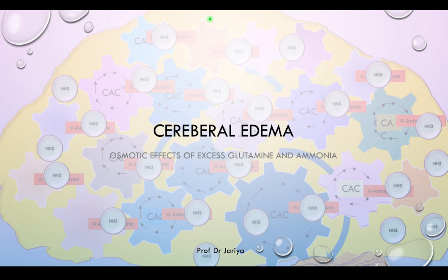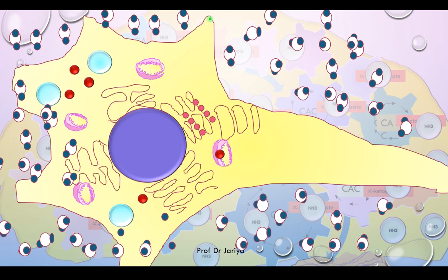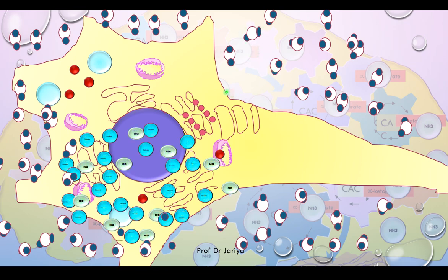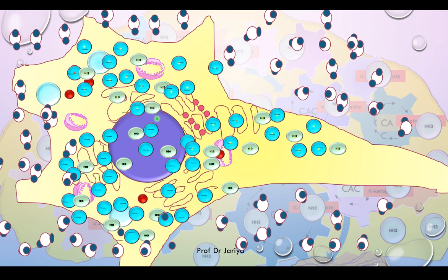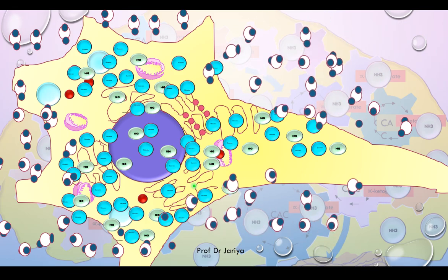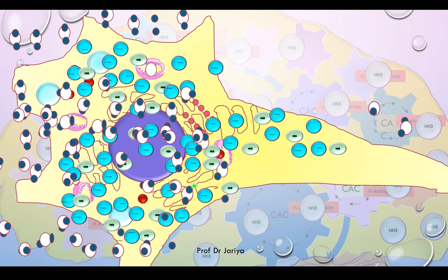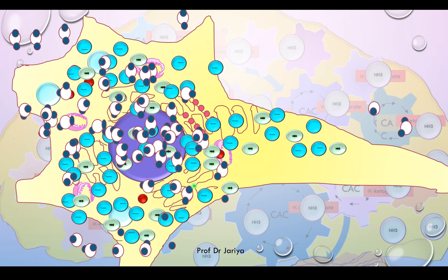There is also the development of cerebral edema, caused due to the accumulation of glutamine and ammonia. Here is the representation of an astrocyte with water molecules. When excess glutamine and ammonia accumulate — shown by the turquoise and blue colored balls — this causes osmotic effects and water is pulled into the astrocytes, leading to swelling of the astrocytes and cerebral edema.